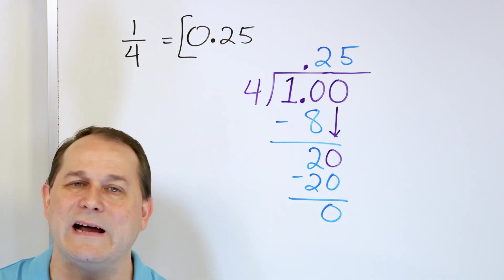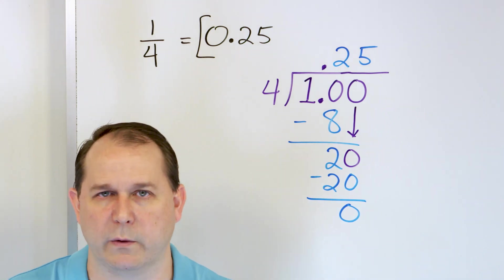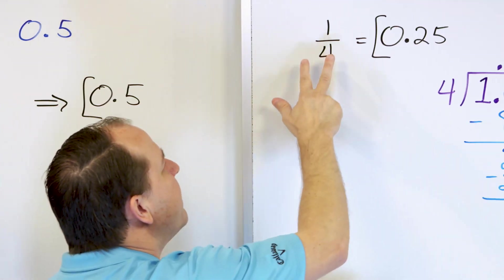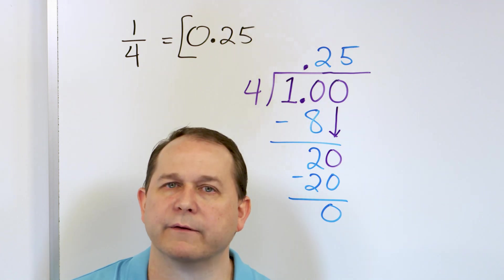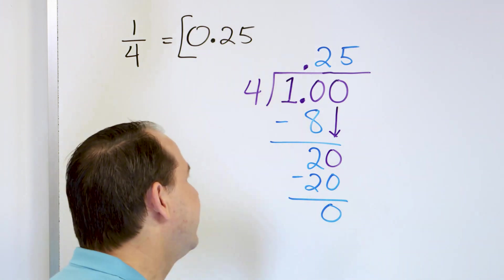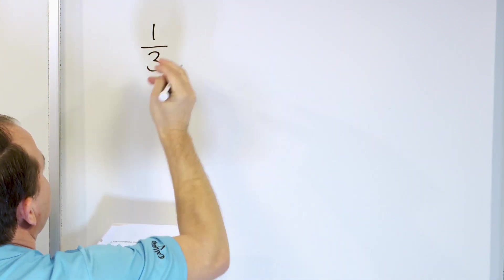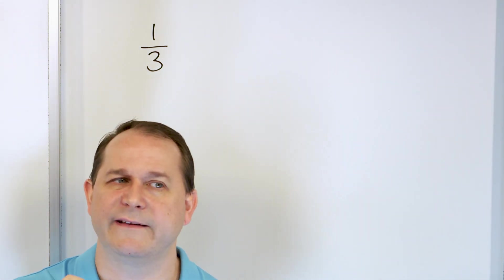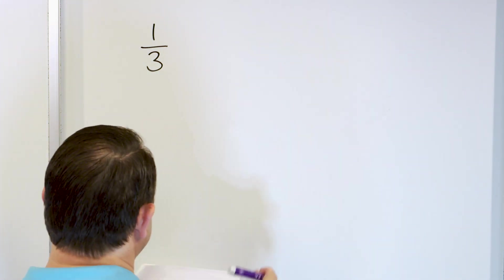Over time I want you to remember these decimals — that's why I'm doing these fundamental ones. I want you to remember that 1/2 is the same as 0.5, and 1/4 is the same as 0.25. It might take a little time to remember those, but for now I'm showing you how to calculate them. Now let's look at a really important one — what about the fraction 1/3? What is the decimal equivalent of 1/3? Some of you may know, some may not — let's calculate it.